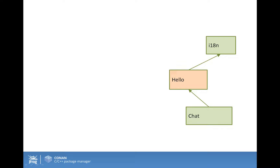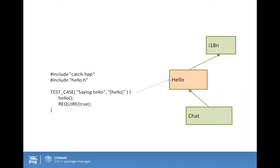Let's start with this example. Let's say that we are developing a chat application and we have a hello library. That hello library might depend, transitively, on another library like an internationalization library. For this hello library, we have tests, and we are using the Catch framework to code some tests. When we are building and testing our hello package, we want to run those tests to make sure the package is correct and that the unit tests are passing. So it should be possible to depend on Catch — I could add a dependency to the Catch package in my hello package recipe.